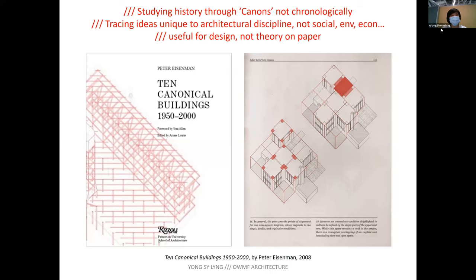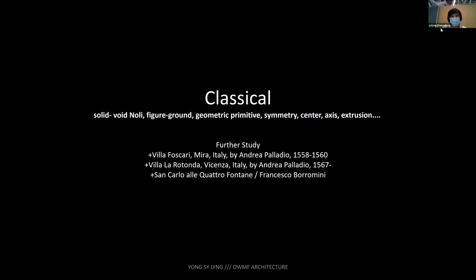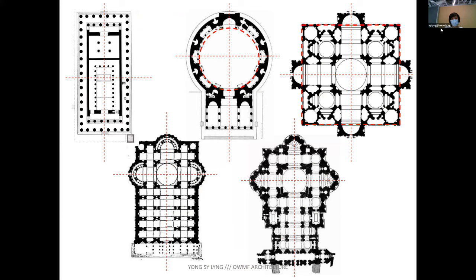In this lecture I'm not quite following the timeline, because we are not looking at things chronologically but rather chasing ideas that develop over different periods of time in history. We'll start with classical. By now, after your exercise, you're quite familiar with certain languages of architecture — things like symmetry, perfect shapes, axes.